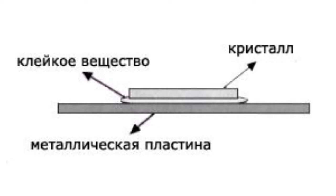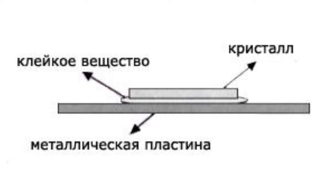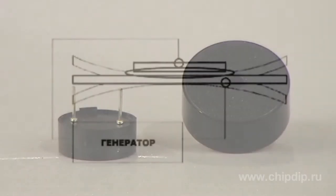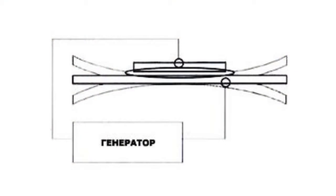The sound is created by the movement of the metal plate. Application of DC current between the electrodes of the piezoelectric diaphragm causes mechanical distortion due to the piezoelectric effect. The distortion of the piezoelectric ceramic plate expands in the radial direction, causing the metal plate to bend.